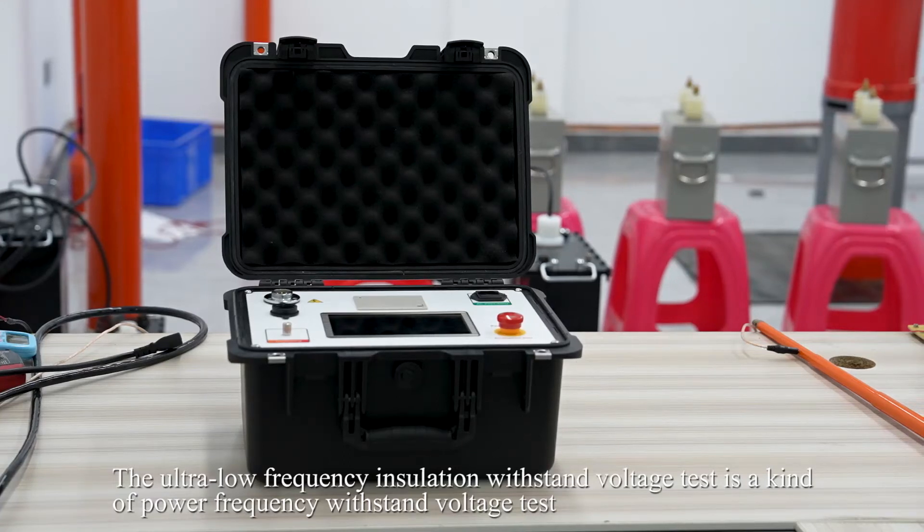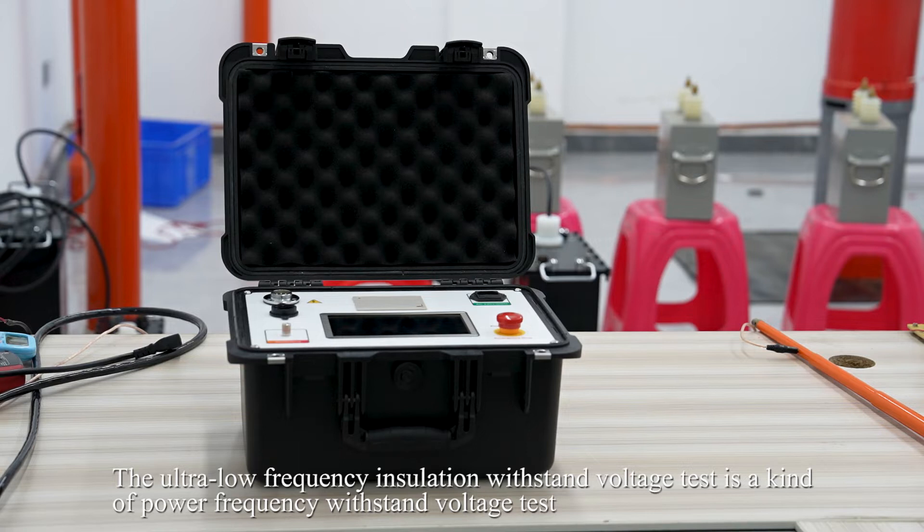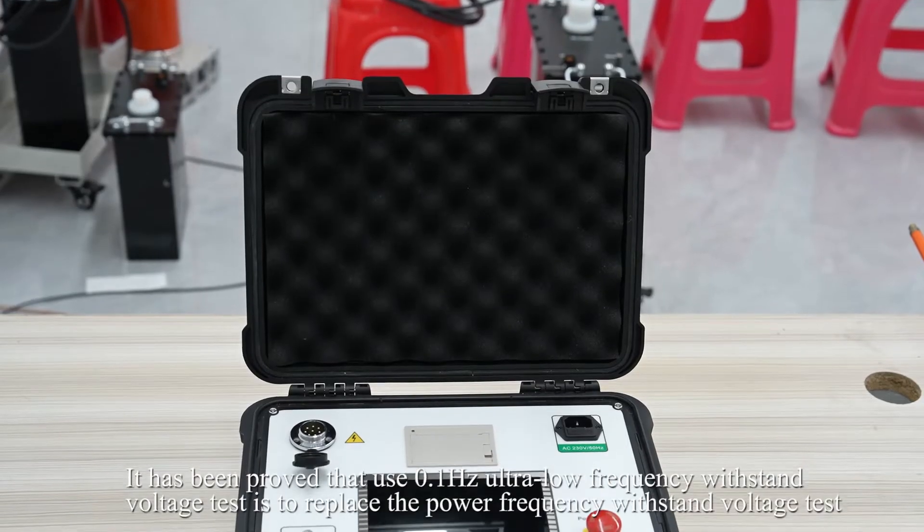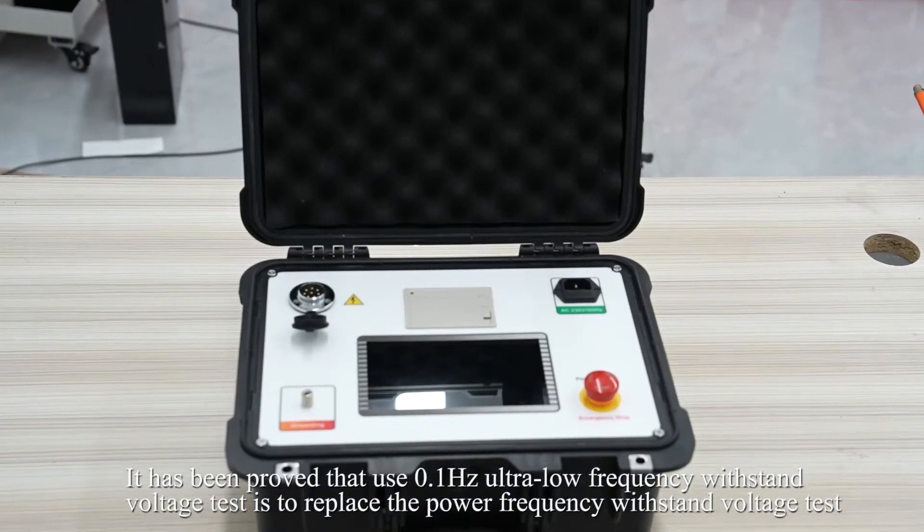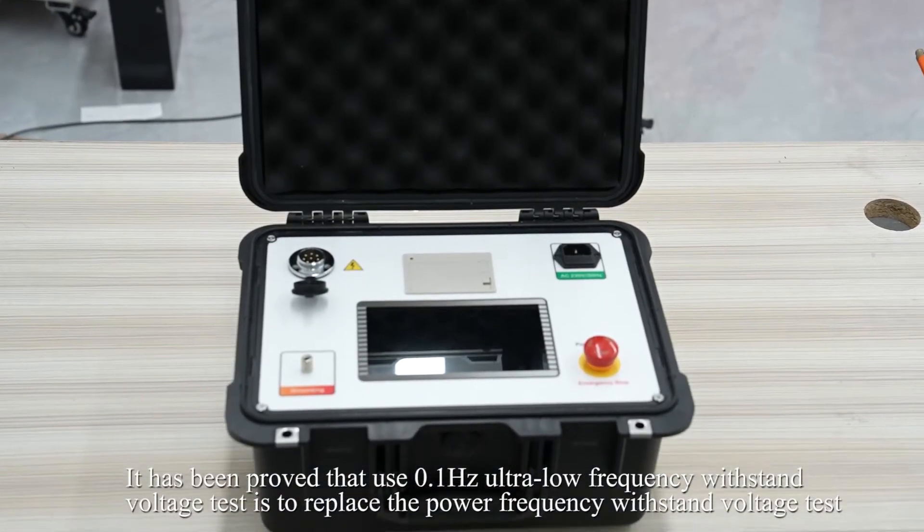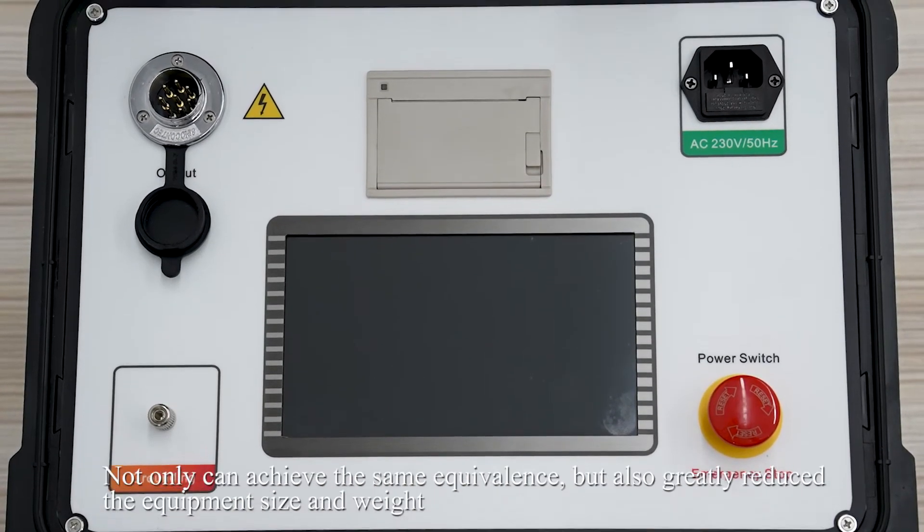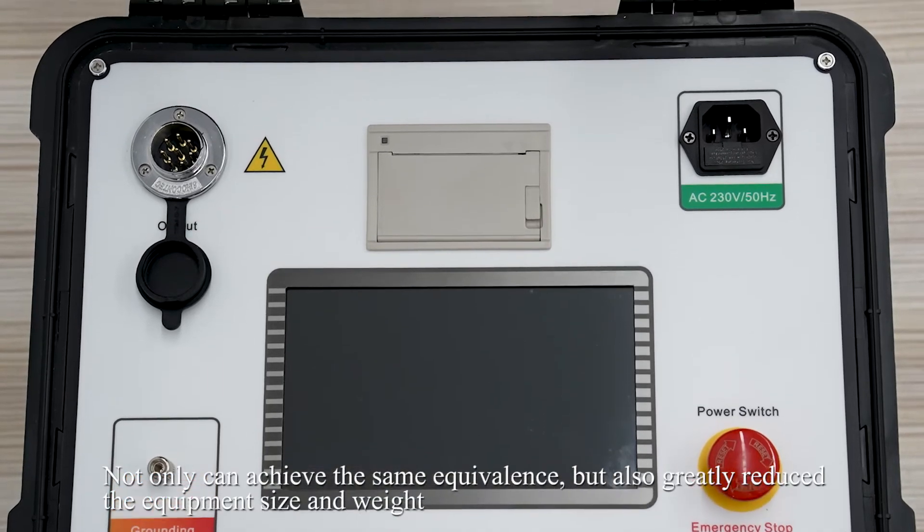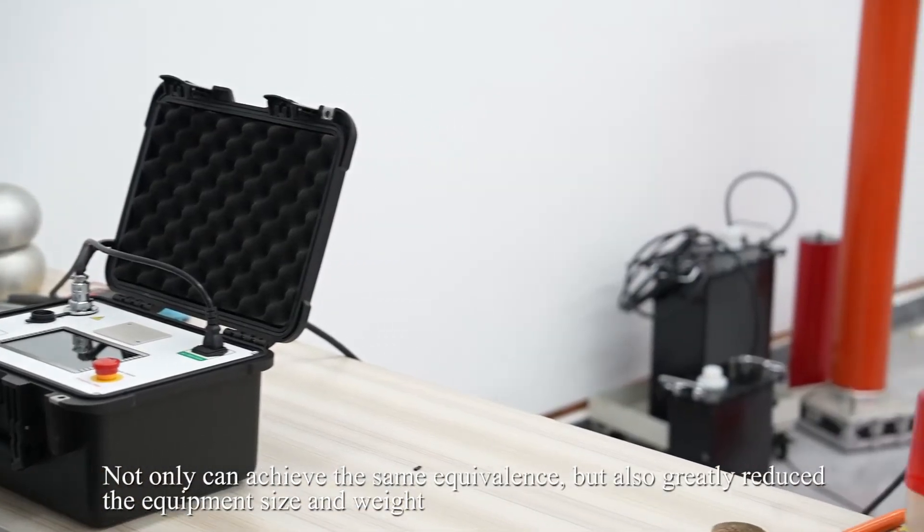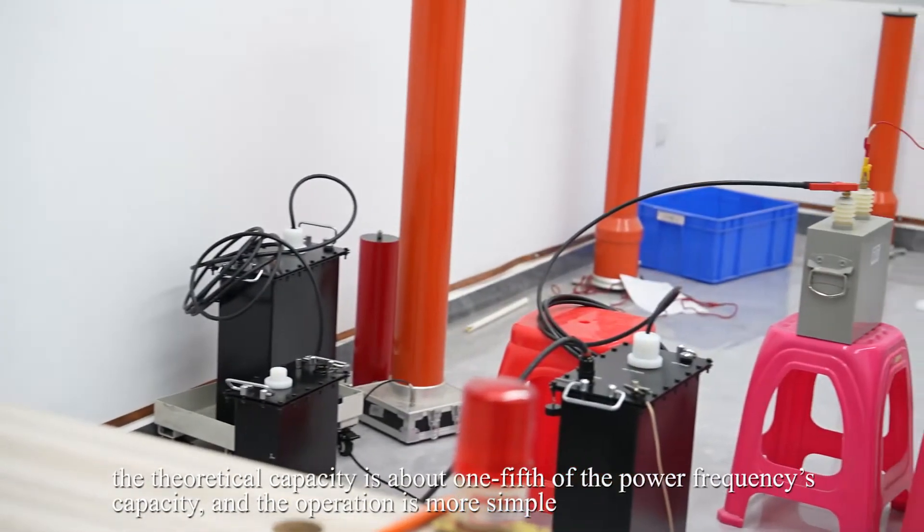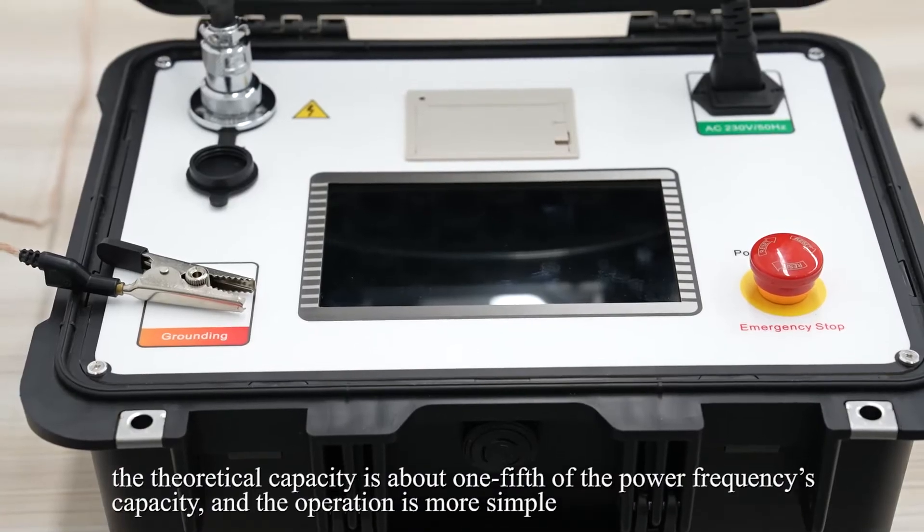The ultra-low-frequency insulation withstand voltage test is a kind of power-frequency withstand voltage test. It has been proved that using 0.1 Hz ultra-low-frequency can replace the power-frequency test, achieving the same equivalence while greatly reducing equipment size and weight. The capacitance is about one-fifth of the power-frequency capacity, and the operation is more simple.